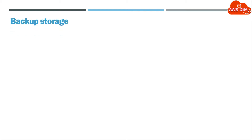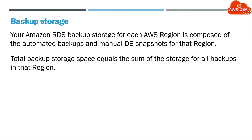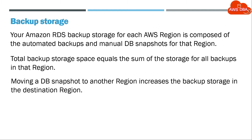Backup storage: Your Amazon RDS backup storage for each region is composed of the automated backups and manual DB snapshots for that region. Total backup storage space equals the sum of the storage for all backups in that region. Moving a DB snapshot to another region increases the backup storage in the destination region. Backups are stored in Amazon S3.